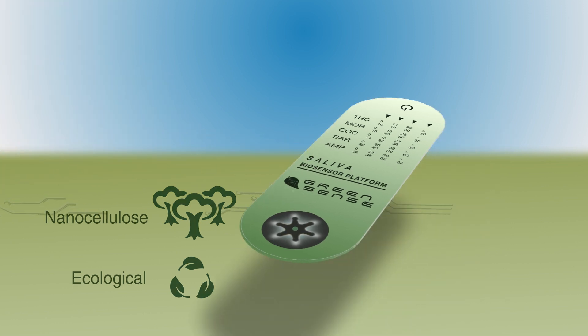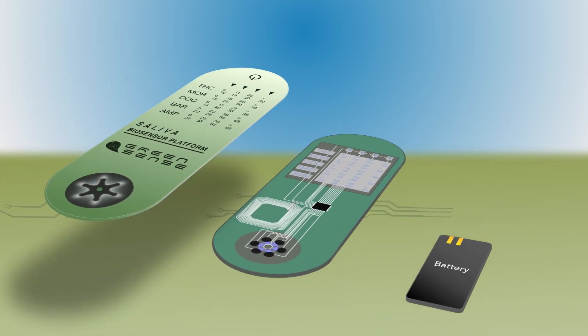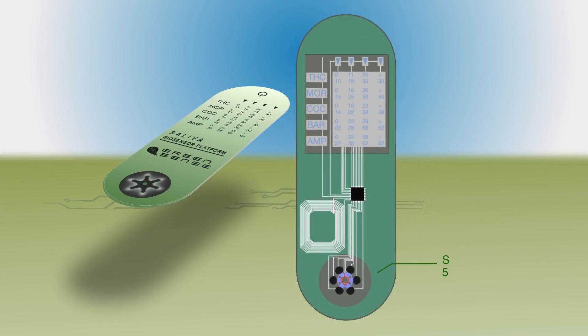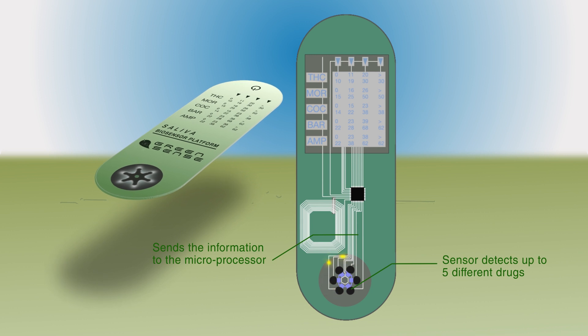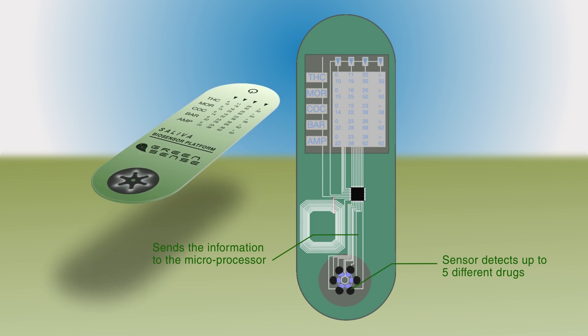The device can detect up to five different drugs. First, the sensor detects the drug. Then, it sends the information to the microprocessor that analyzes the information.